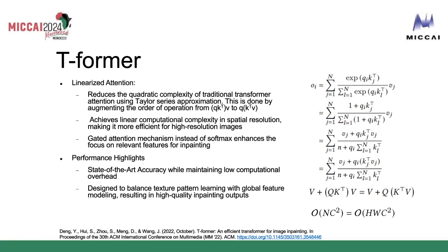Using gated attention instead of softmax also enhances the focus on relevant features for inpainting and further reduces computational complexity. This model is still able to achieve state-of-the-art accuracy while maintaining very low computational overhead, which we validated through our empirical testing. It is also designed to balance texture pattern learning with global feature modeling, resulting in high quality inpainting outputs.